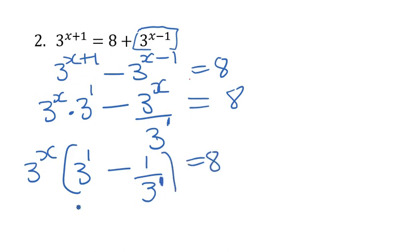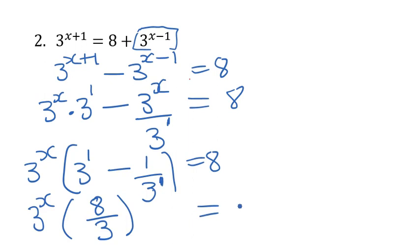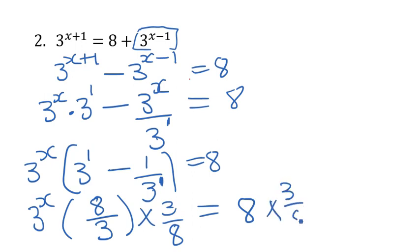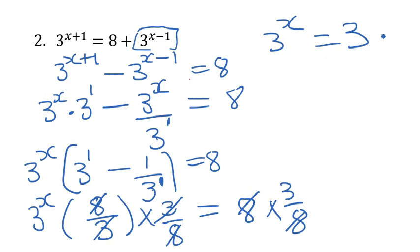So we have 3^x times (3 minus 1/3), close bracket, equal to 8. That is 3^x times (9/3 minus 1/3) = 3^x times (8/3) = 8. To get rid of 8/3, we multiply both sides by the reciprocal, which is 3/8. So 8 and 8 cancel, 3 and 3 cancel, and we are left with 3^x equals 3. The bases are the same, so we equate the exponents, and x equals 1.